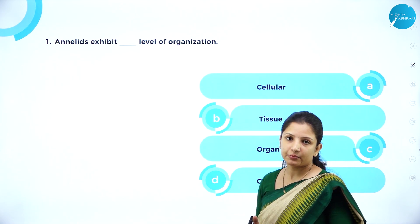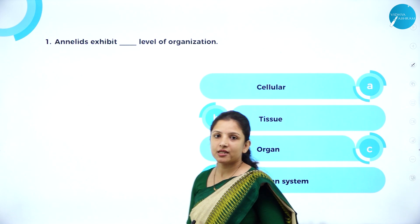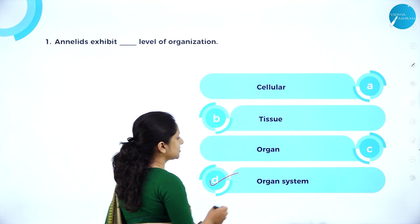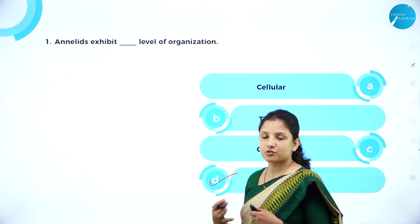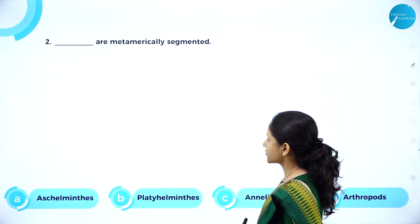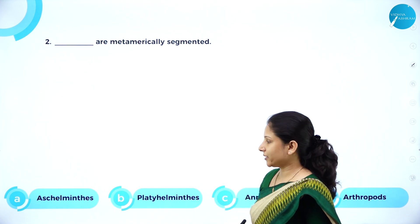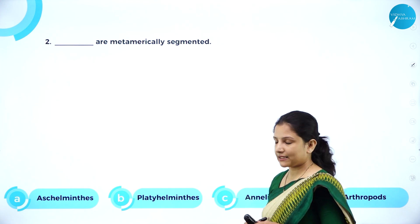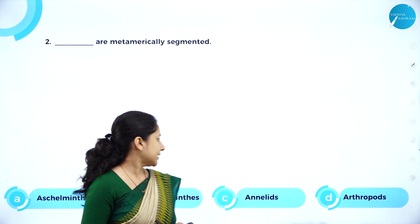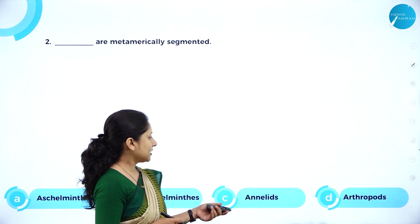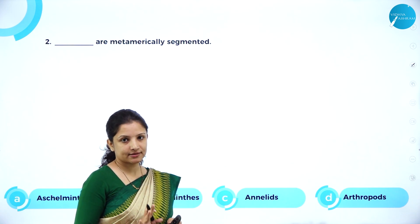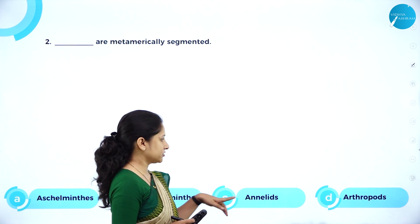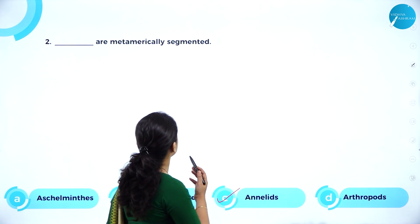Now let us look at some MCQs. First: annelids exhibit which level of organization — cellular, tissue, organ, or organ system? They exhibit organ system level of organization, wherein specific organs group together to perform a specific function. Second: which are metamerically segmented — aschelminthes, platyhelminthes, annelids, or arthropods? Aschelminthes are roundworms with no segments. Platyhelminthes are flatworms with no segments. Arthropods are segmented but not metamerically segmented — metameric segmentation means organs are repeated in the segments. So the answer is annelids.